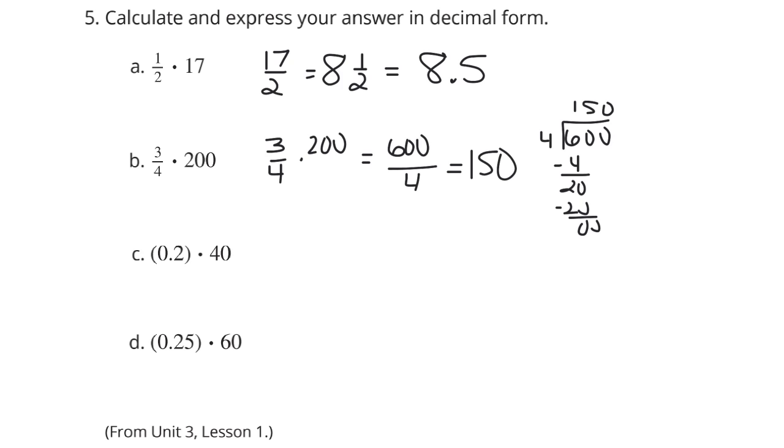Two tenths of 40. Well, one tenth of 40 is equal to four. So two tenths of 40 is going to equal two times that, which would be eight. Now, 25 hundredths of 60 is the same thing as one fourth of 60, which is 60 over four, which is just going to be 15.